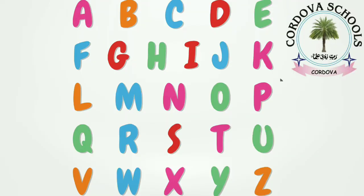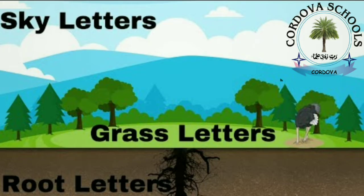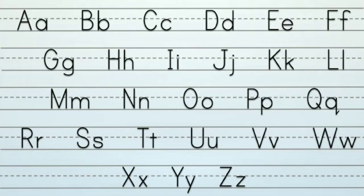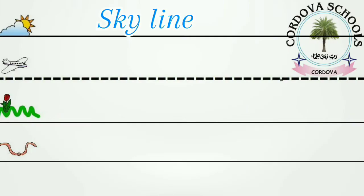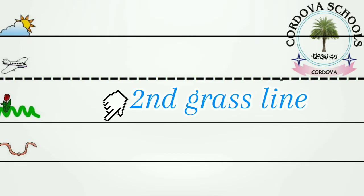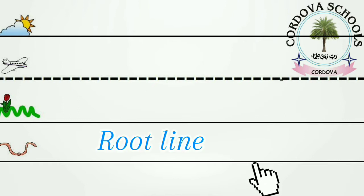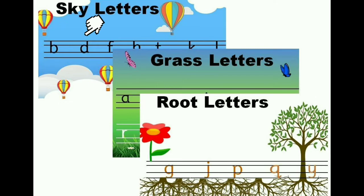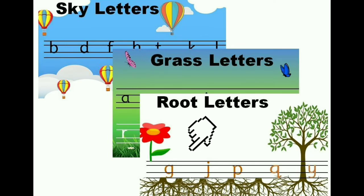After the recognition of letters A to Z and their sounds, we are going to discuss sky, grass, and root letters. As you know, the English alphabet is written across four lines. The first line is called the skyline, the second is the first grass line, the third is the second grass line, and the last is the root line. We show the skyline with the symbol of sky or clouds, the two grass lines with the symbol of grass, and the root line with the symbol of roots.